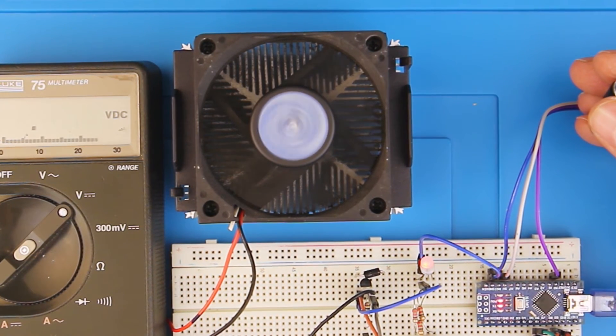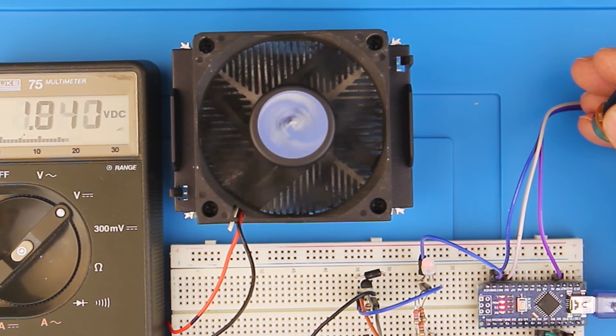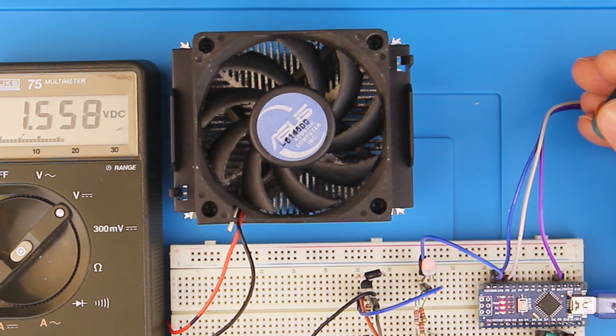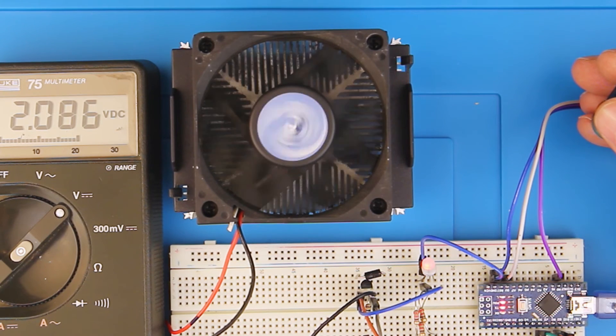So here's analog write in action. Watch as we increase the pot position, the duty cycle for the PWM increases, the fan speeds up, and the LED gets brighter.